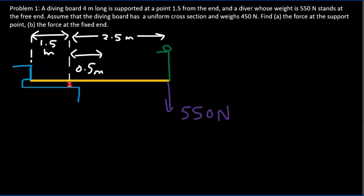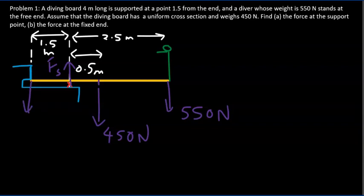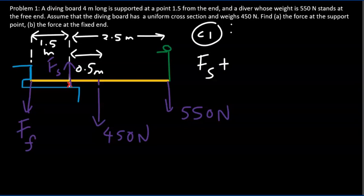The second force is the weight of the board, 450 N, acting at the 2-meter mark. The third force is the upward normal force from the support, Fs. The fourth force is a downward force from the fixed end, Ff. Applying the first condition of static equilibrium — balancing forces — Fs equals the sum of all downward forces: 450 plus 550 equals 1000 N. So Fs minus Ff equals 1000 N.